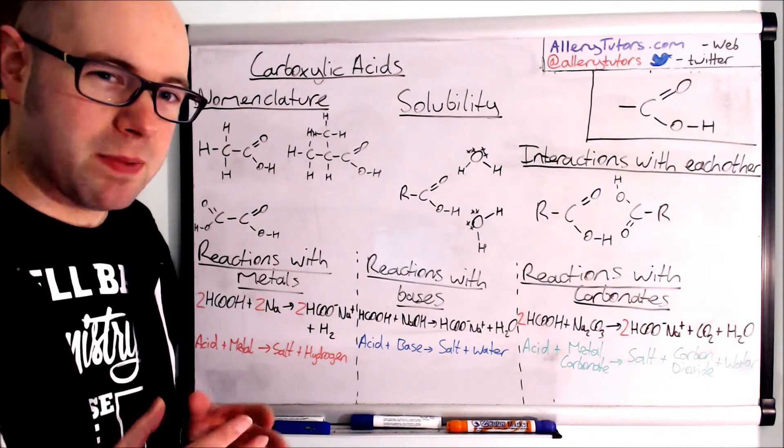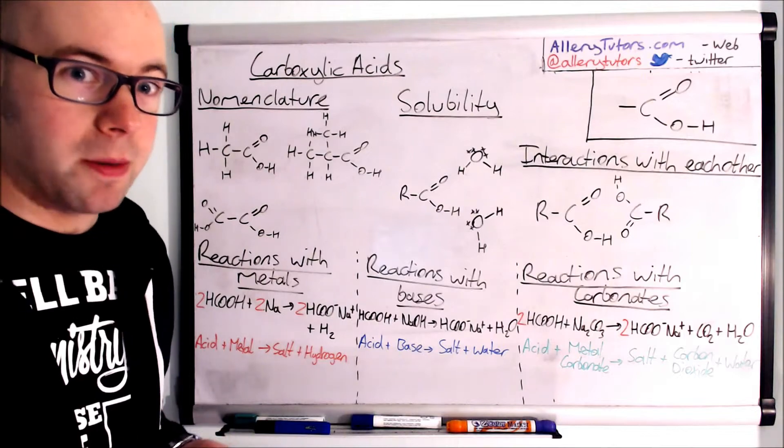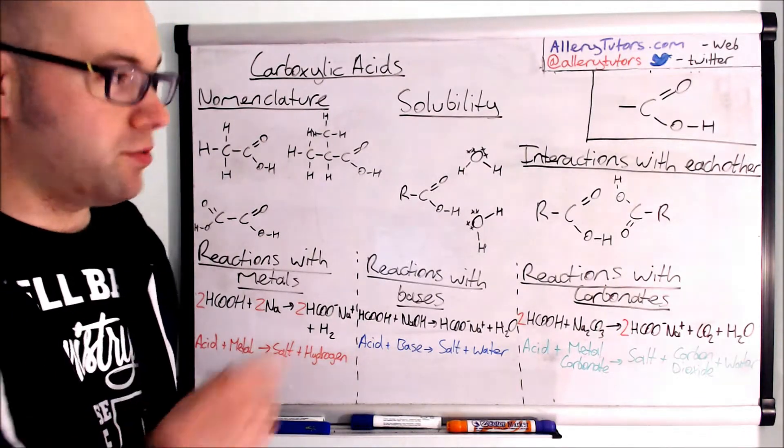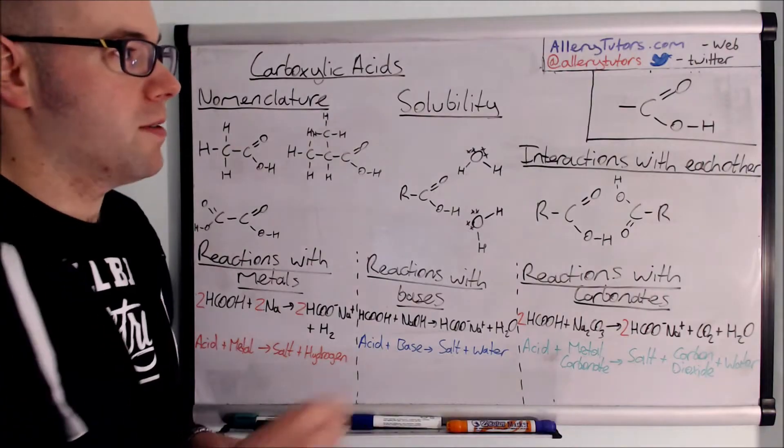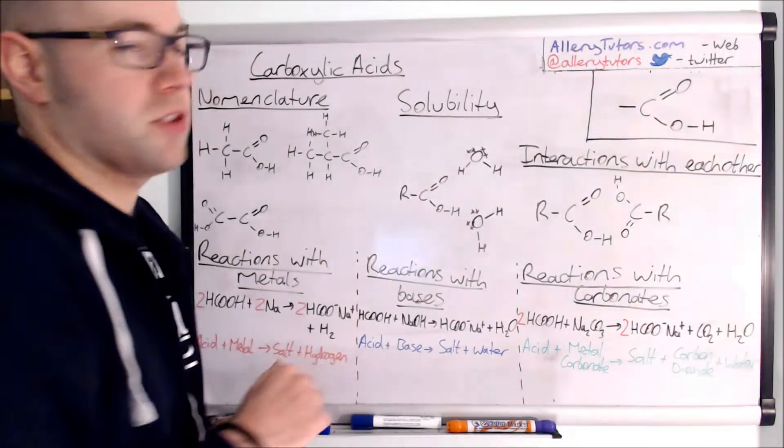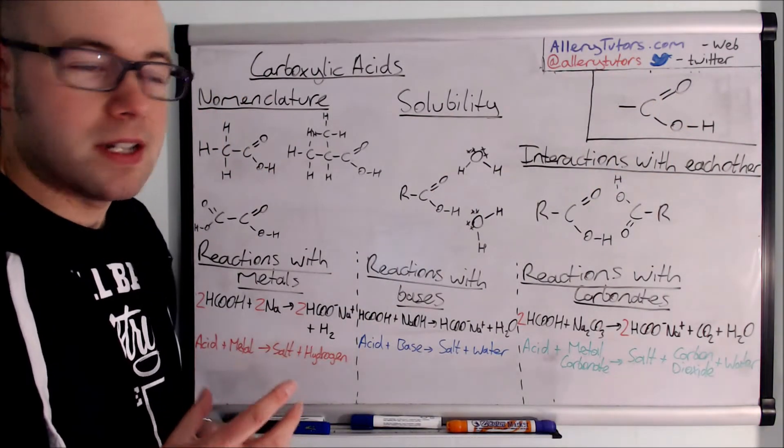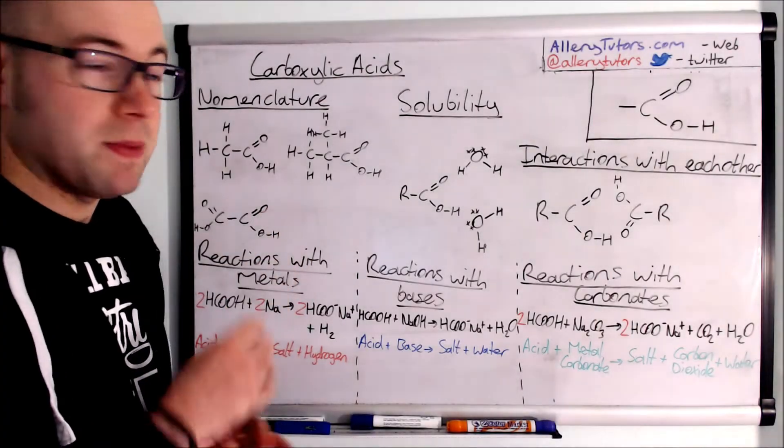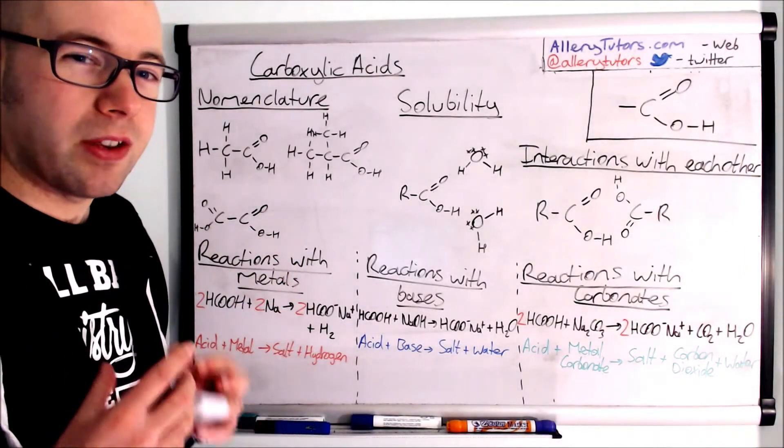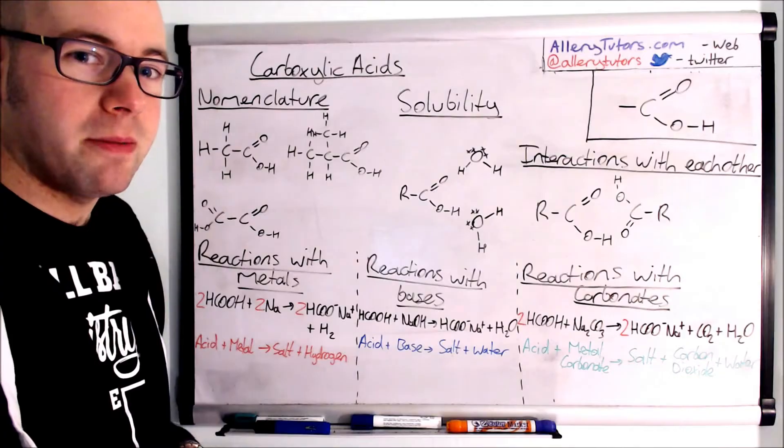So I suppose the best place to start is finding out what a carboxylic acid is. Its functional group is drawn on the right hand side there, the top right. It's basically a carbon with double bond oxygen and an OH group attached to it. This is really important because whenever you see this in a molecule you've got to think about reactions to do with carboxylic acids.